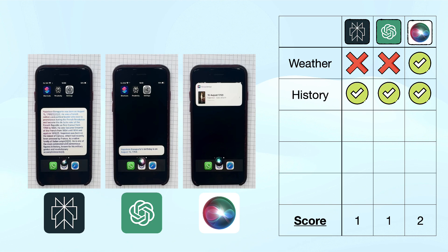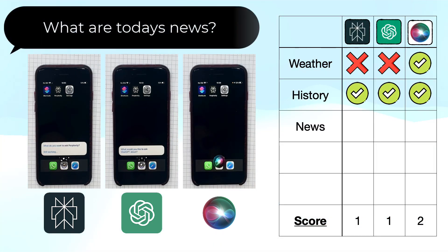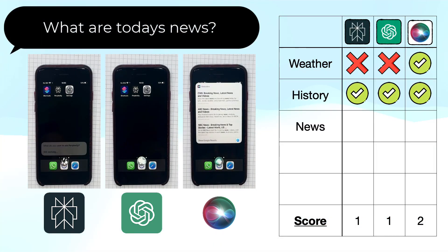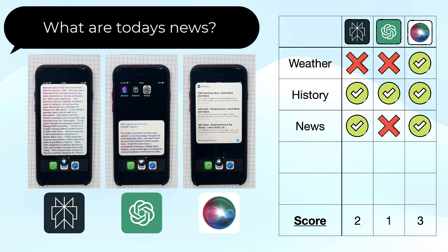Next, let's ask a question about the news: What are today's news? Here we see Perplexity and vanilla Siri are able to provide news, while ChatGPT fails. The Perplexity news are very extensive and read out, while the Siri interface is probably more intuitive and gives you the news to read and easily follow up.